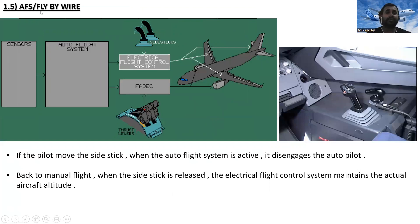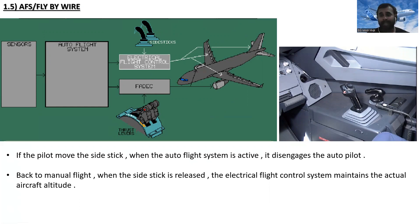Regarding the auto flight system fly-by-wire interface: if the pilot moves the side stick while the auto flight system is active, it disengages the autopilot — meaning the autopilot reverts back to manual flight. When the side stick is released, the electrical flight control system maintains the actual aircraft attitude.